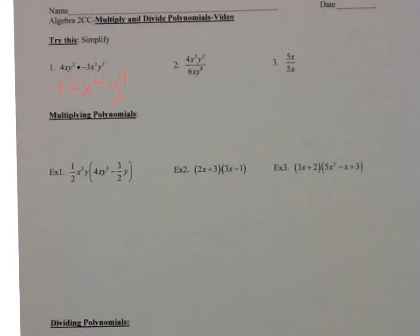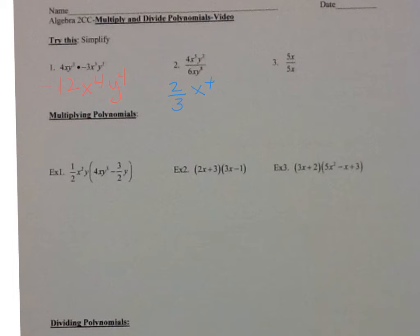Notice 4 divided by 6 — I can't do 4 divided by 6, but I can reduce it to 2 thirds. We have x to the fifth divided by x to the first is x to the fourth. And then y to the second divided by y to the eighth is y to the negative 6. But remember, we talked about negative exponents — we don't normally like negative exponents, so let me rewrite this.